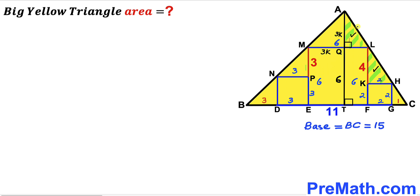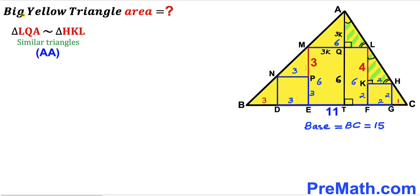Now let's focus on right triangles HKL and LQA. The 90-degree angles are congruent, and the corresponding angles are congruent. Therefore triangles HKL and LQA are similar by the angle-angle similarity theorem. For triangle HKL the ratio is 4 to 2, so for triangle LQA the sides are 2K and 4K.